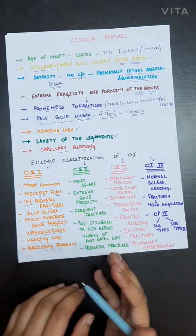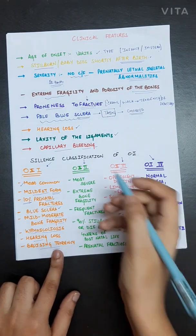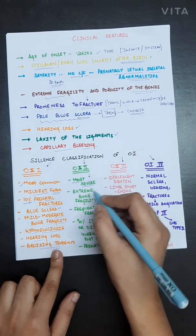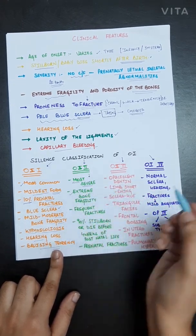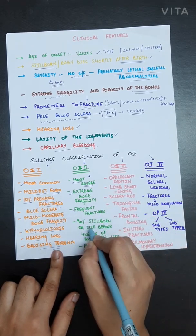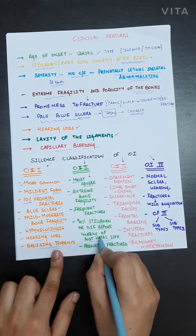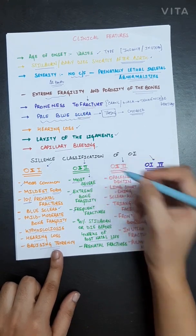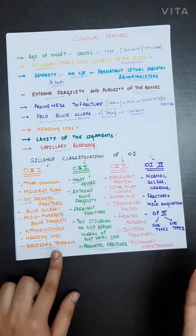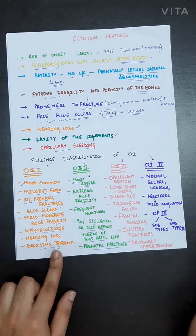Type 2 is the most severe type of osteogenesis imperfecta. It presents with extreme bone fragility and frequent fractures. Approximately 90% of patients are stillborn or die before 4 weeks of postnatal life. In utero fractures are also present in this type.